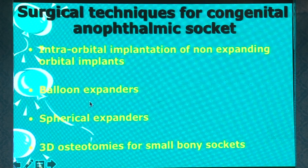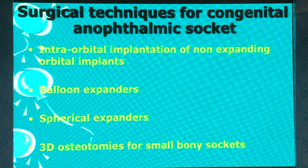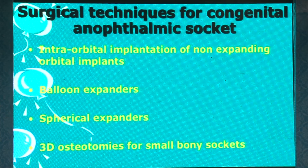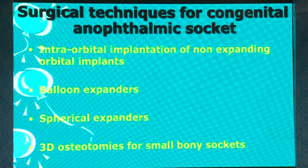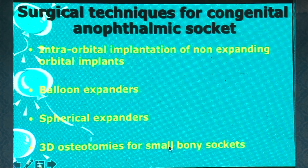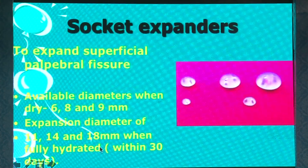There are several modifications where you can change the volume of the intraorbital balloon. There are spherical expanders which will expand in size when placed, and these are useful as we will see. For bony deformities, you can do osteotomies of various kinds — there are a lot of studies in the literature outlining different techniques for that.